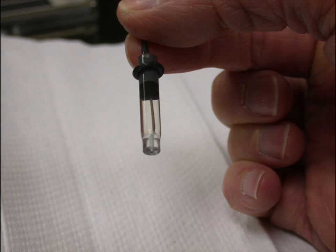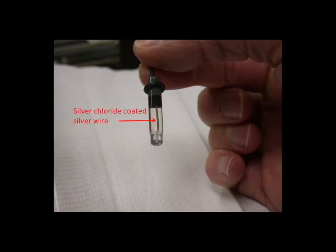Here is a more practical reference reaction based on the reduction of silver chloride to metallic silver. Both the oxidized and reduced forms are there at the wire surface. Since chloride is a product, it shows up in the Nernst equation for this half-cell.